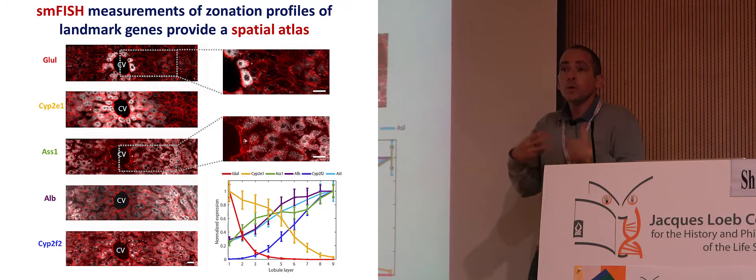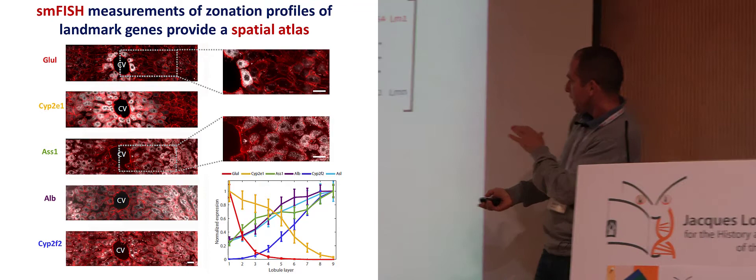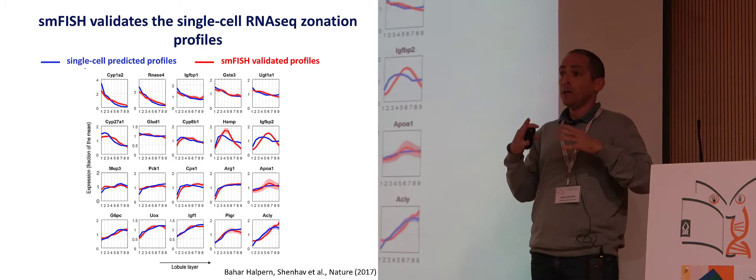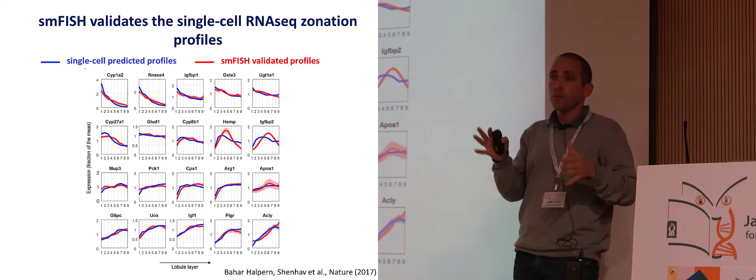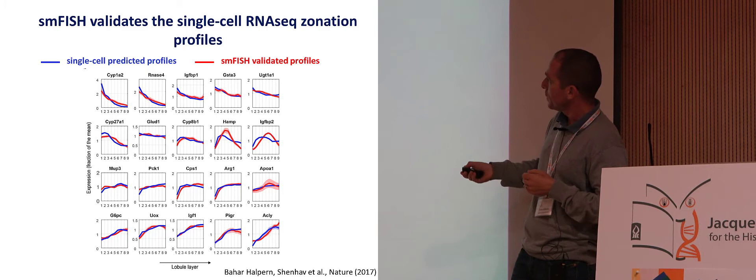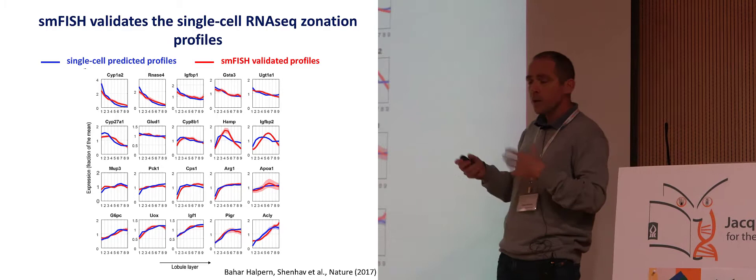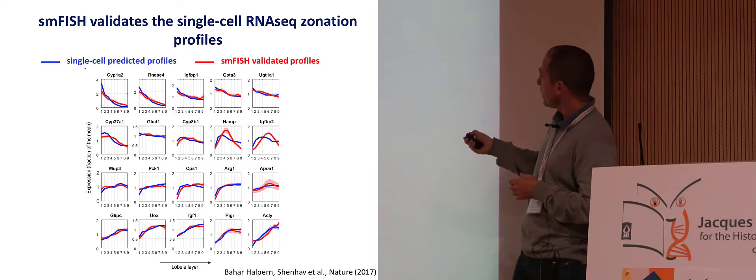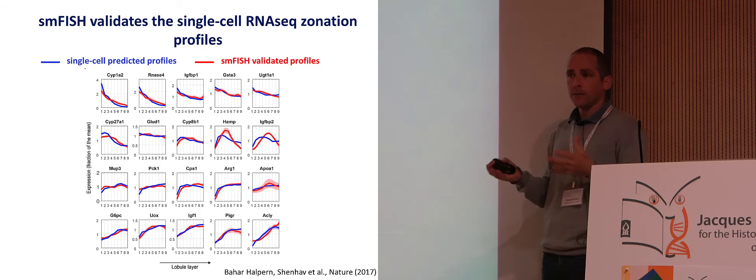We have an algorithm that produces predicted zonation profiles. It was very important to validate them with a completely different approach — single molecule FISH. We took 20 of these predicted zonation profiles, designed single molecule FISH probe libraries for each one, and measured many lobules. We saw a very nice correspondence between the shapes of the predicted and measured zonation profiles. So we believe what we're getting from this spatial atlas.